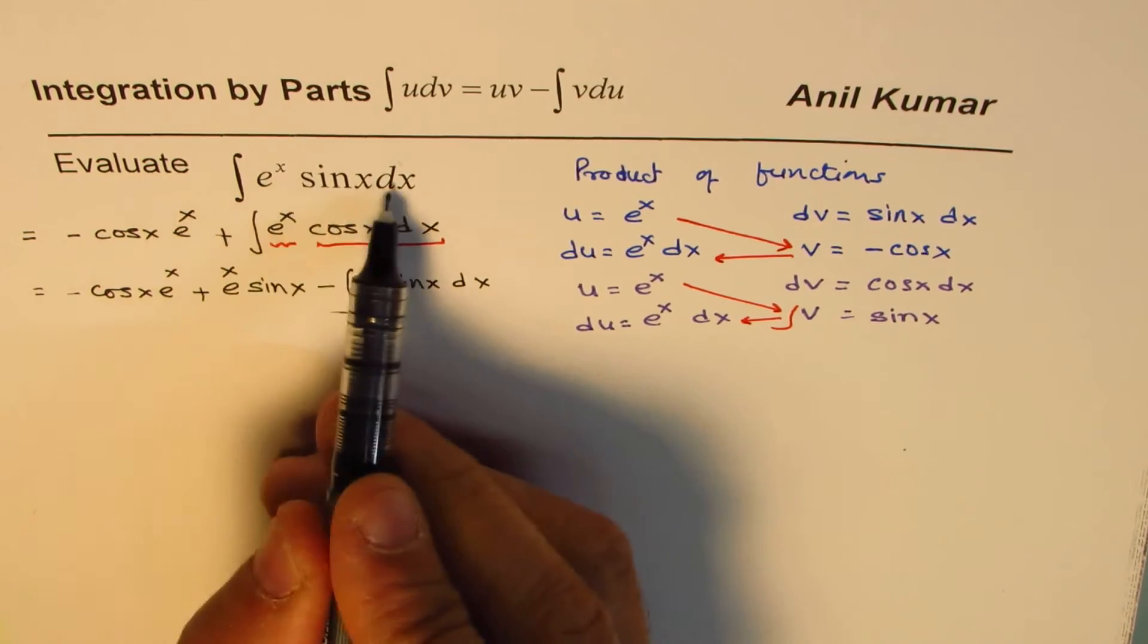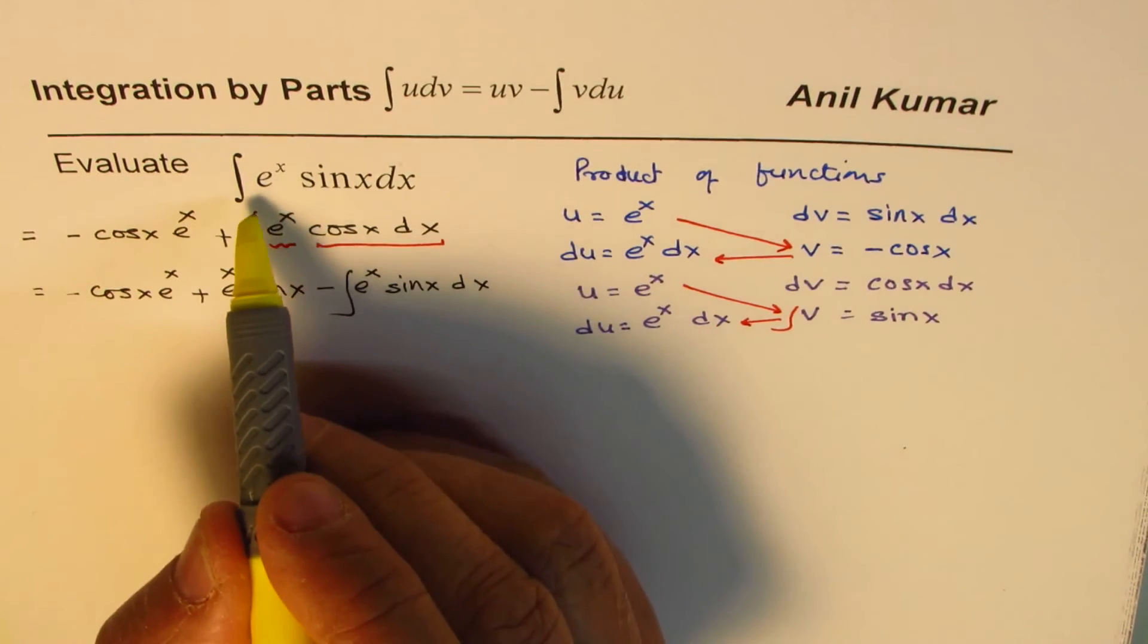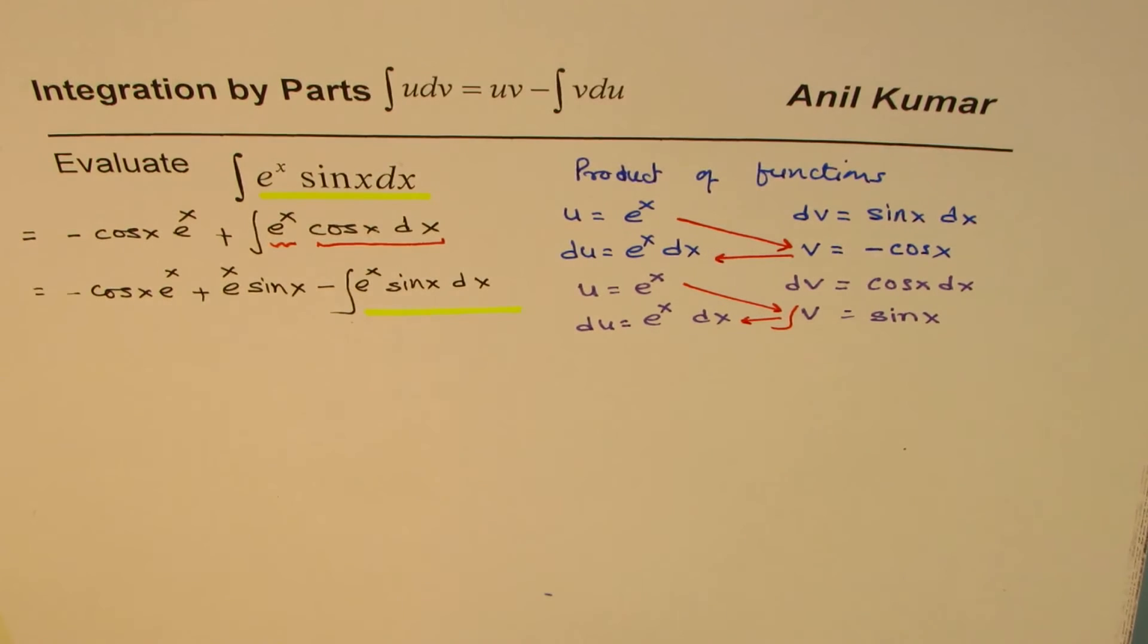Now, all this is equal to that integral. You see these two things are same. We have this integral in terms of its own integral. Those are very similar. So that gives us an idea that we can bring the two terms together, rearrange, and solve.